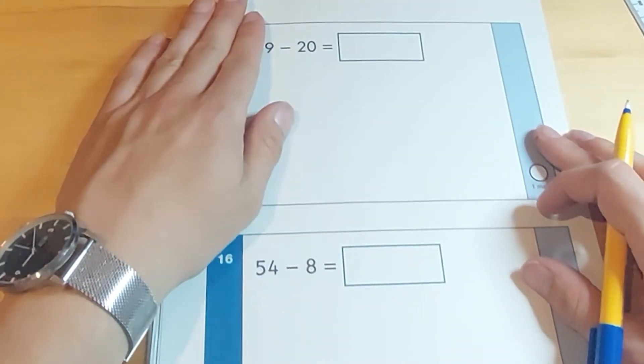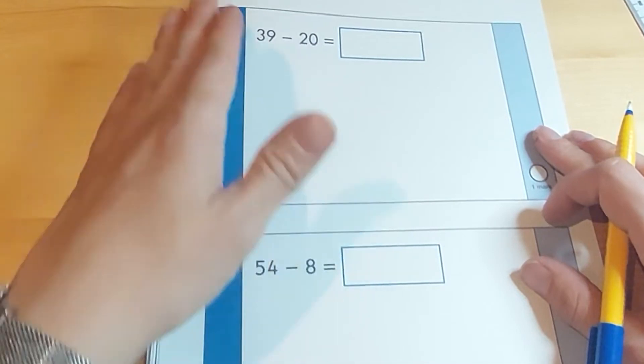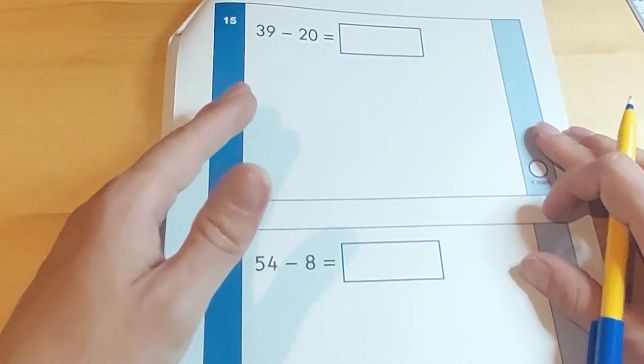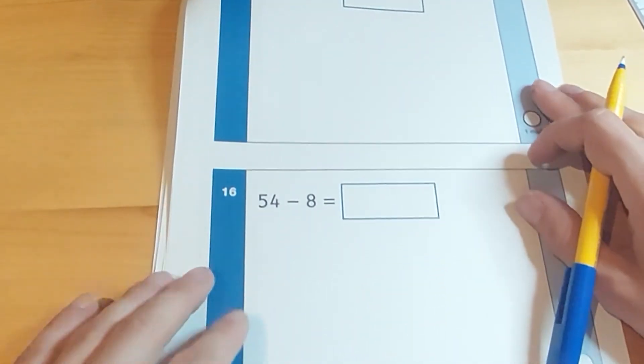Going over to the next page, we've got 39 take away 20. I've already done a similar question. They could count back in tens or draw the grid. Here, 54 take away 8.